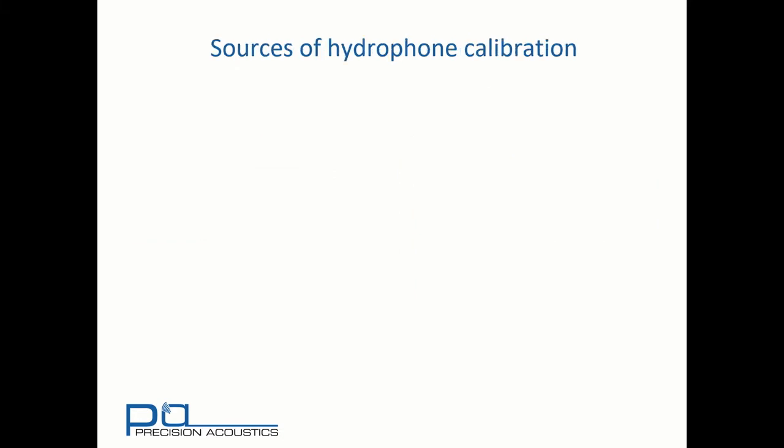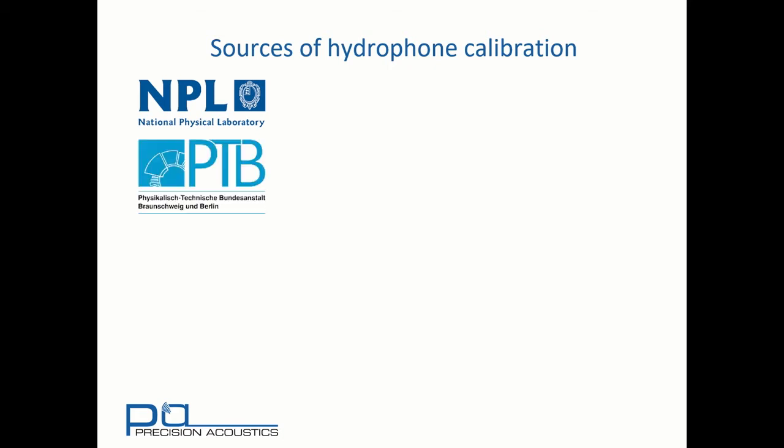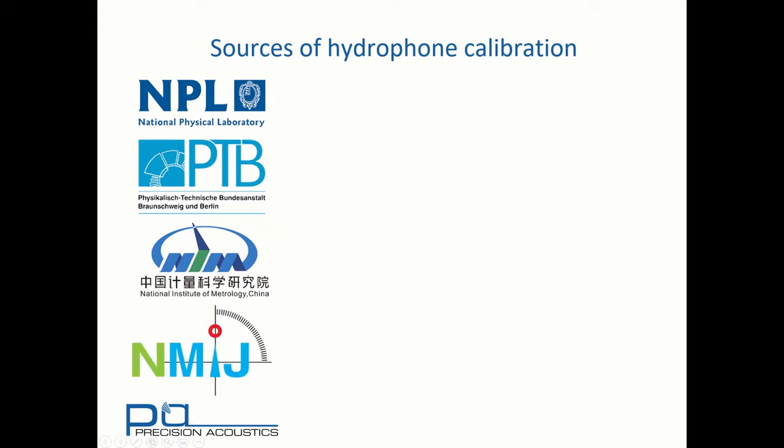Examples of such institutions are the National Physical Laboratory in the UK, PTB in Germany, NIM in China, and NMIJ in Japan.